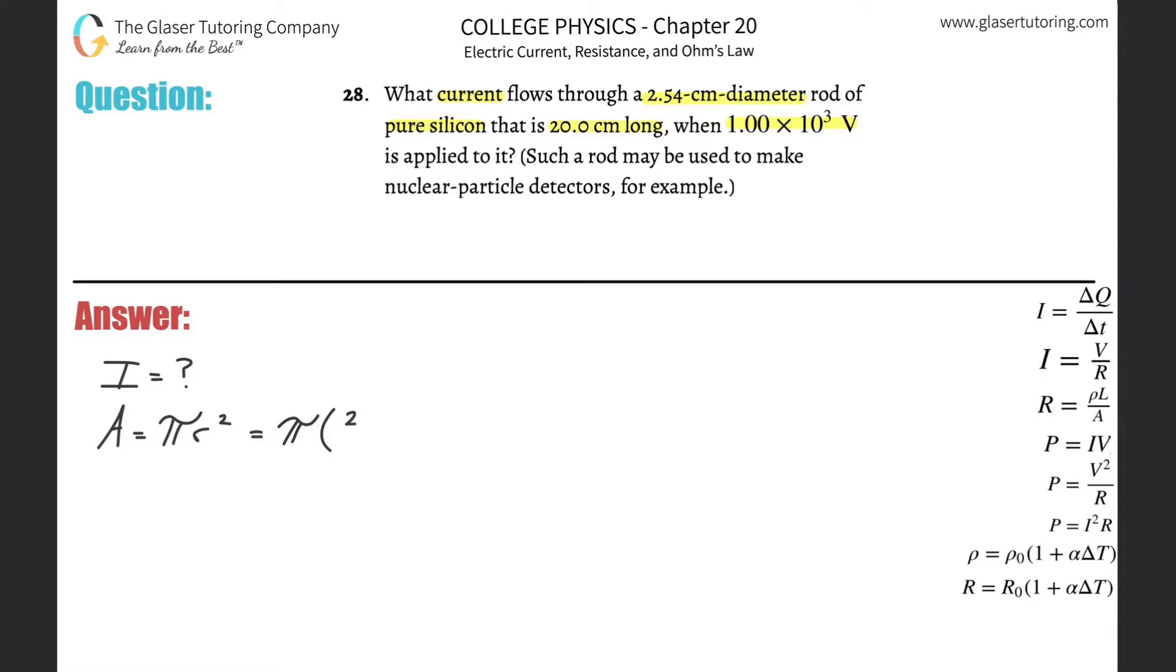So 2.54 divided by 2. That would be the radius. But it's in centimeters. It's in centimeters. We need it in meters. So you've got to multiply that by 10 to the minus 2.